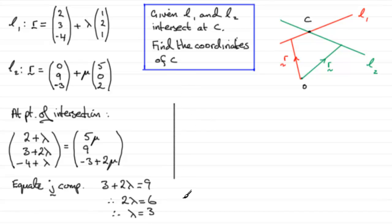And then I can work out what R is, and then get the coordinates of C. So, if I substitute lambda equals three into equation L1, then what I get is R equals (2, 3, -4), that initial vector, plus lambda, lambda being three, multiplied by (1, 2, 1). And if we work this out, you end up with this equaling the vector (5, 9, -1).